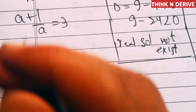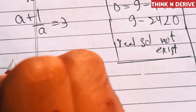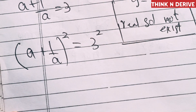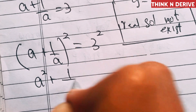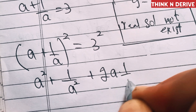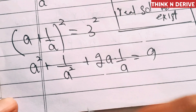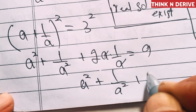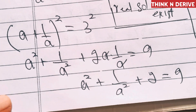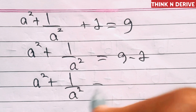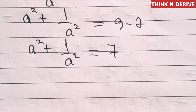Since we need to find a⁷ + 1/a⁷, let's first square both sides of a + 1/a = 3. Using (a + b)² = a² + b² + 2ab, we get a² + 1/a² + 2(a)(1/a) = 9. The a and 1/a cancel, giving a² + 1/a² + 2 = 9, so a² + 1/a² = 7.